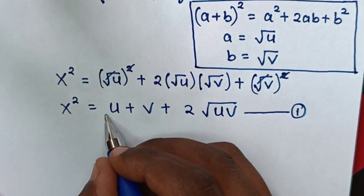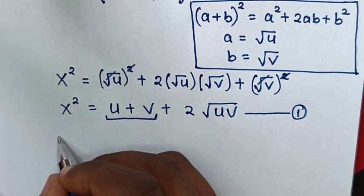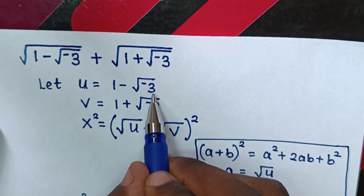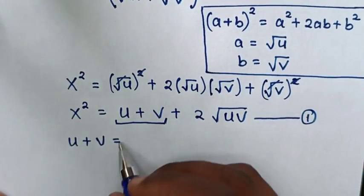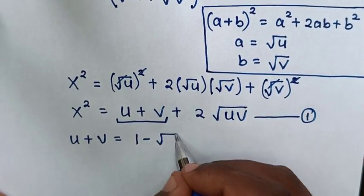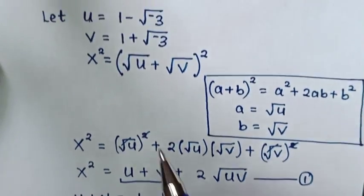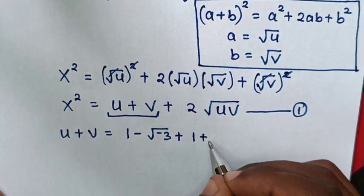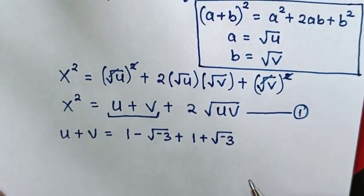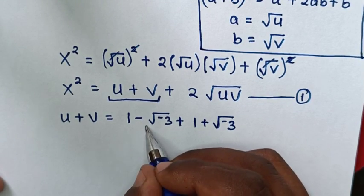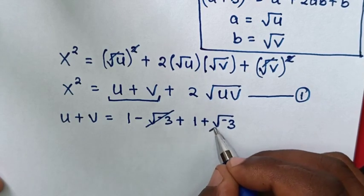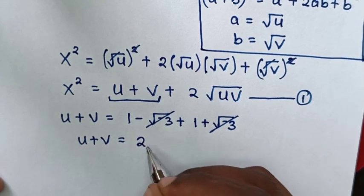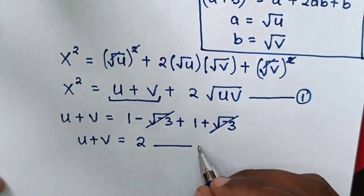Then in the next step we are going to find the value of u plus v. So u plus v equals — substituting u which is 1 minus square root of negative 3, plus v which is 1 plus square root of negative 3. The negative square root of negative 3 and positive square root of negative 3 cancel, so u plus v equals 2. This will be equation 2.